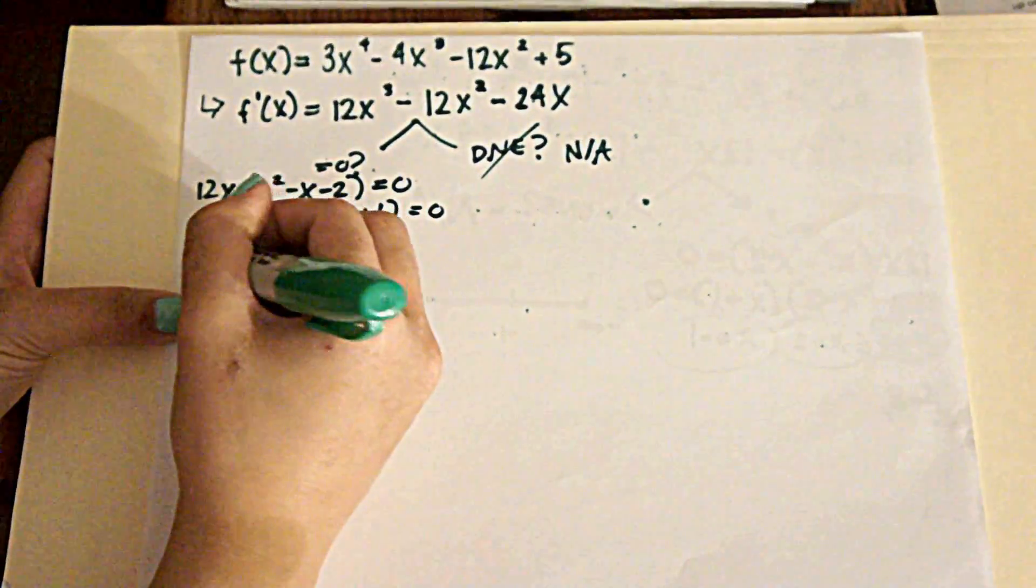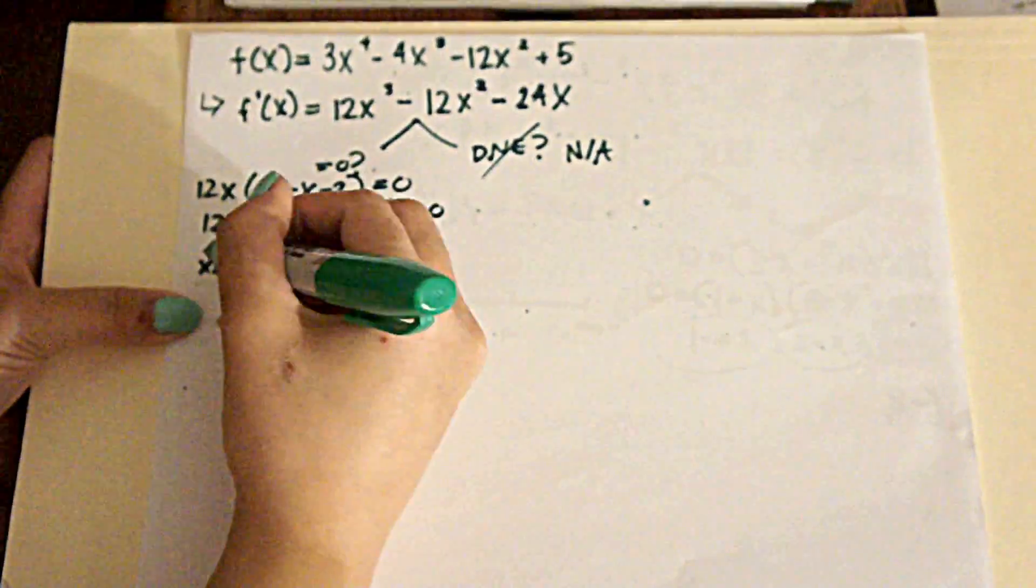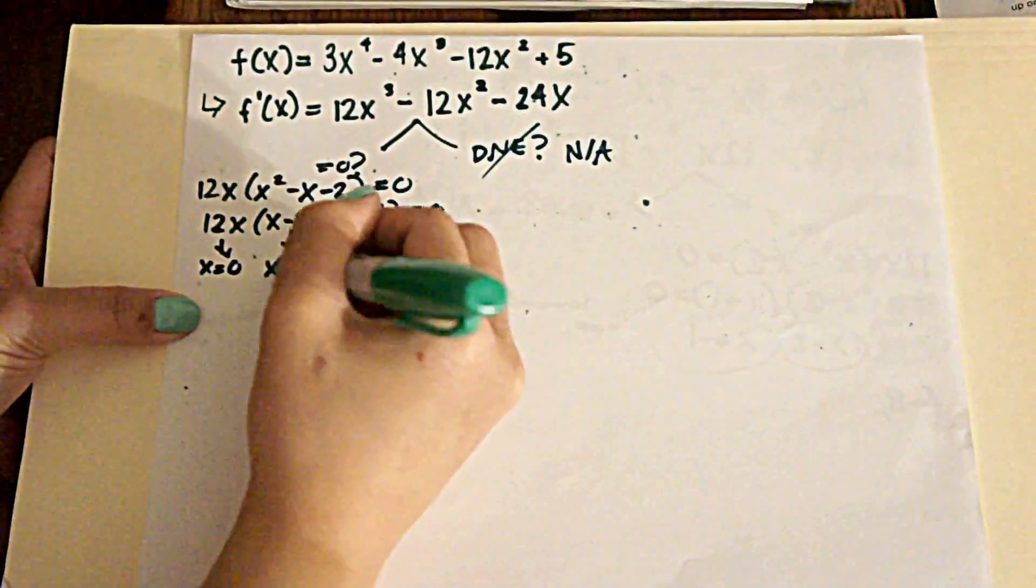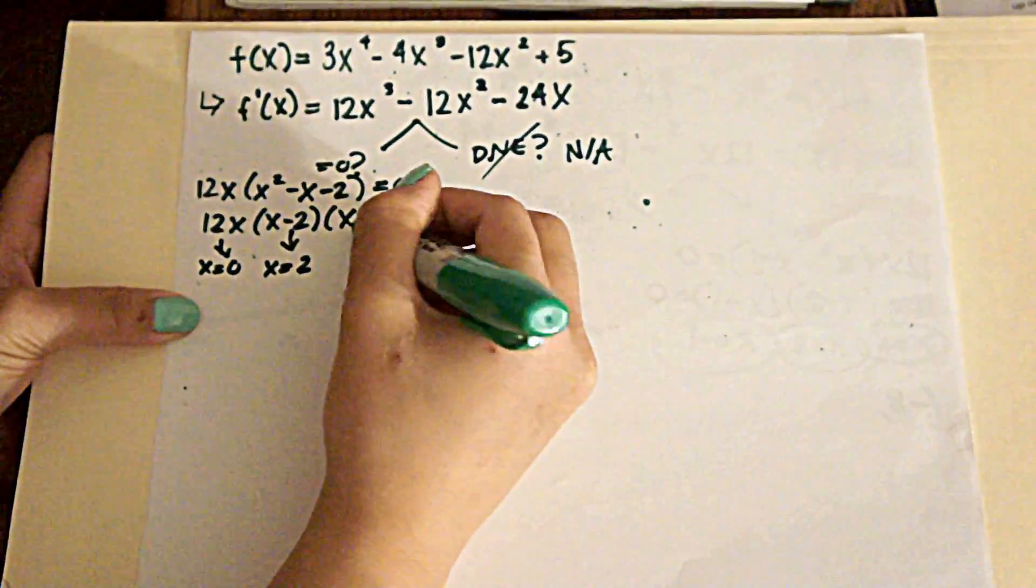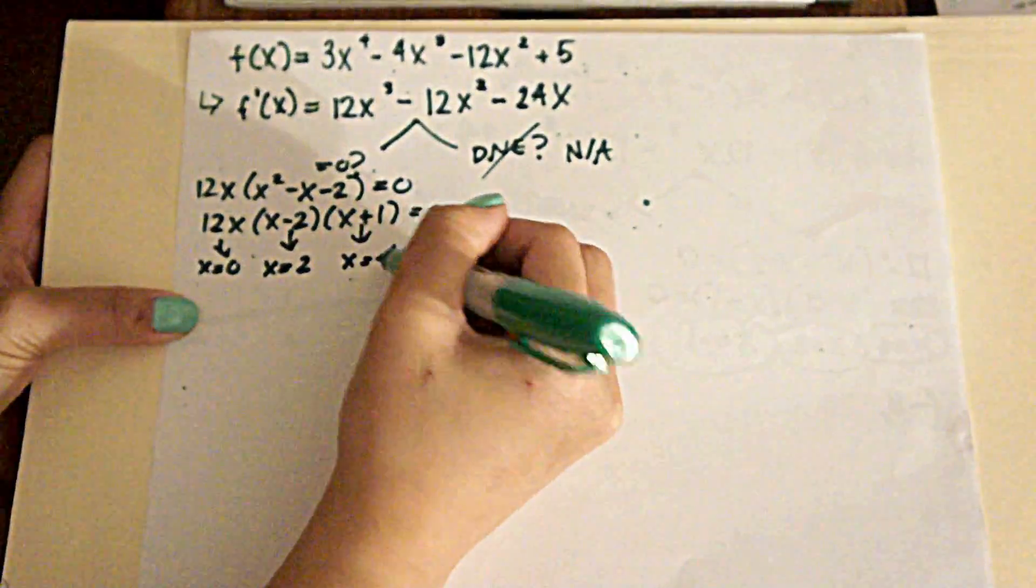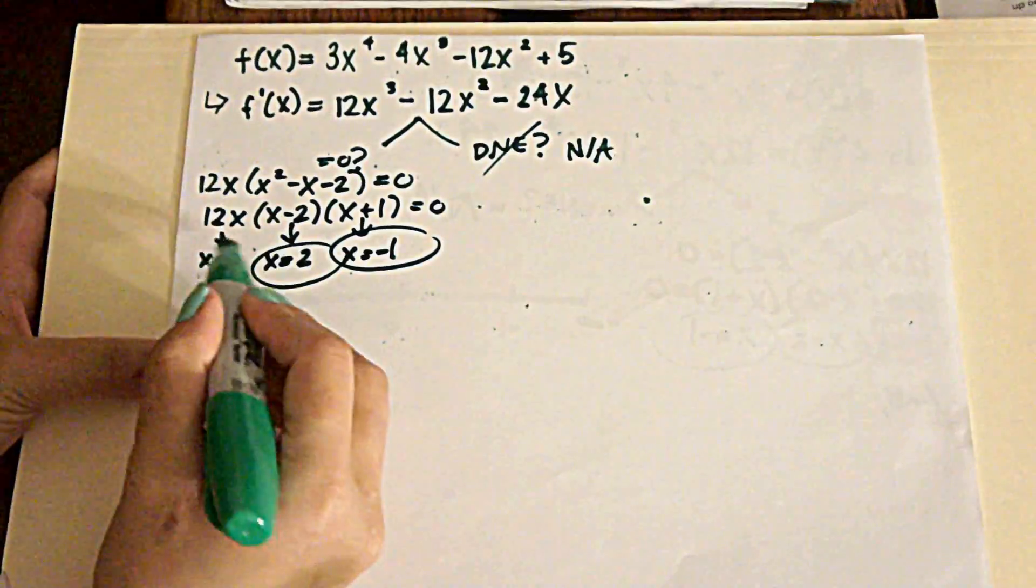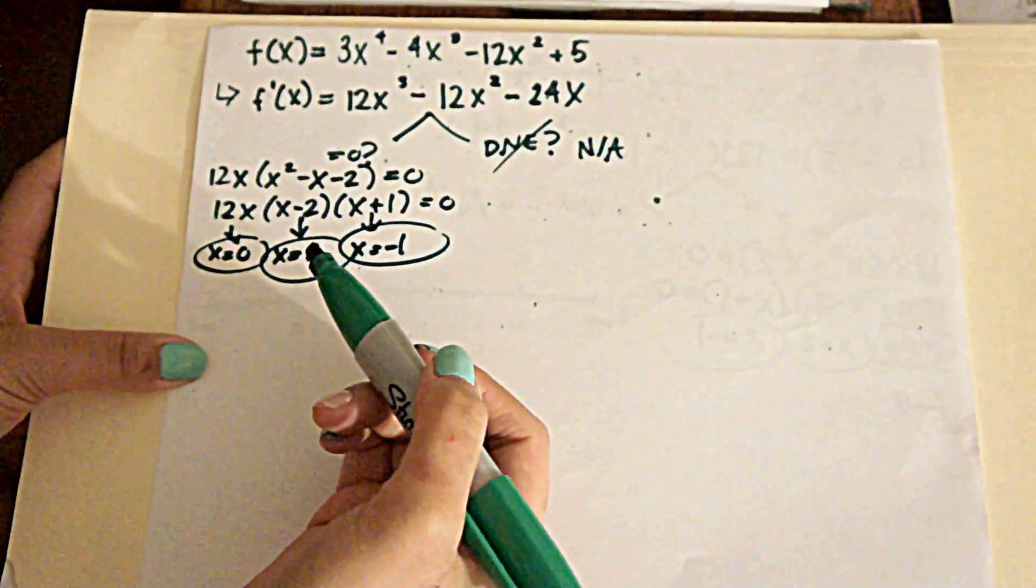That would give us x equals 0, x equals positive 2, x equals negative 1. And those are our 3 critical numbers.